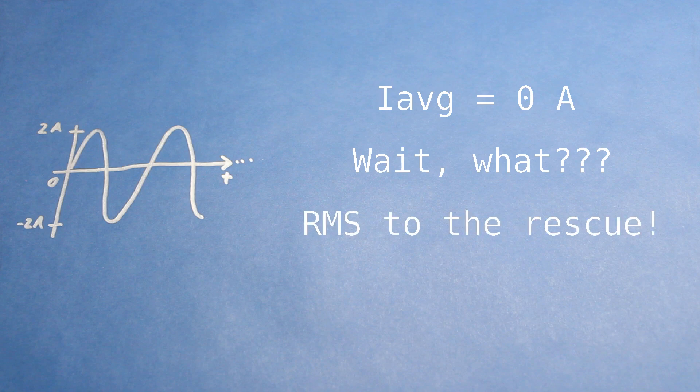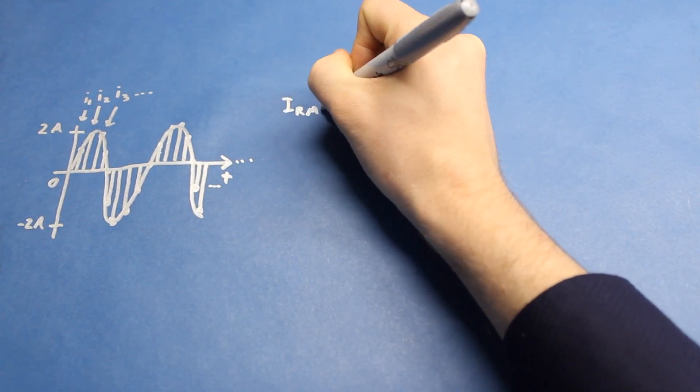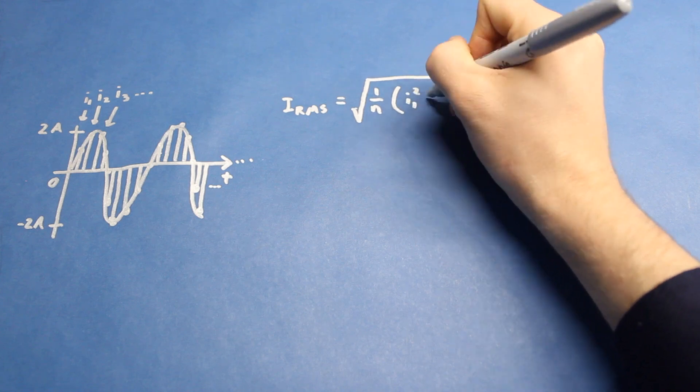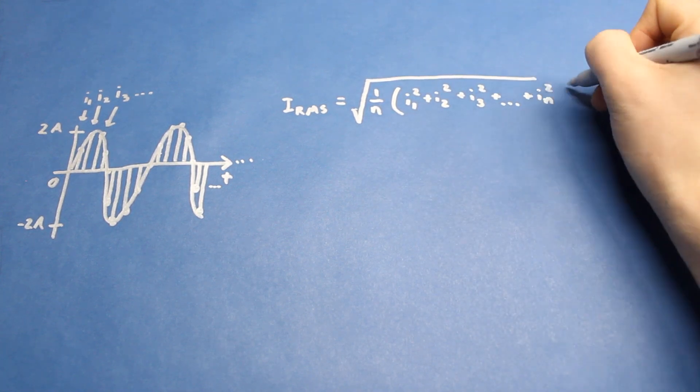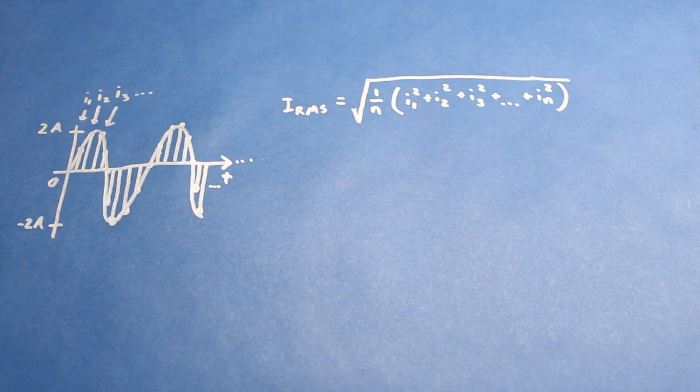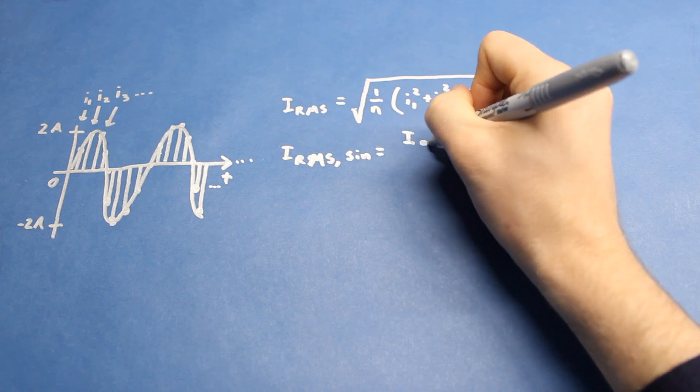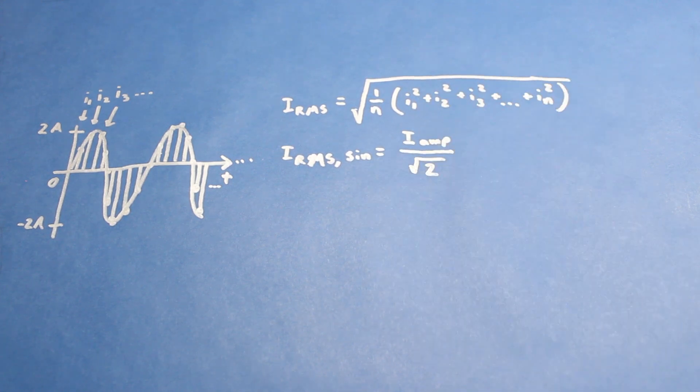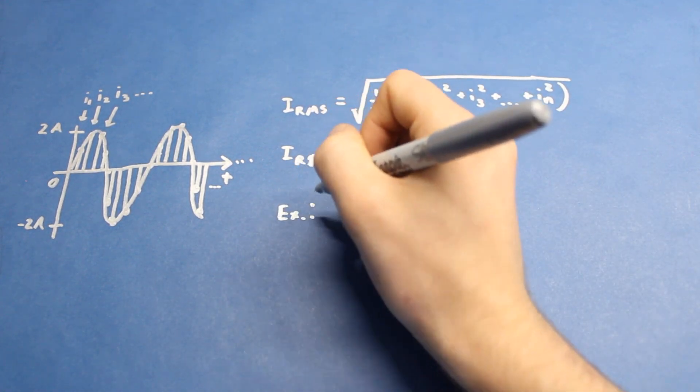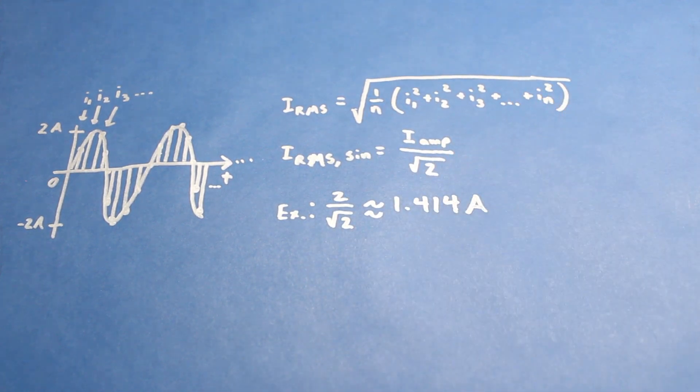We'll use the statistical root mean square method to find this. To find the RMS value, we'll sample the current at constant intervals. We'll square each value, add them together, divide by the number of values, and then square root the whole thing. This will result in a positive number. For continuous sine waves with no offset, the RMS value is equal to the sine wave's amplitude divided by the square root of 2. For our 2 amp amplitude example, the RMS current would be about 1.414 amps.